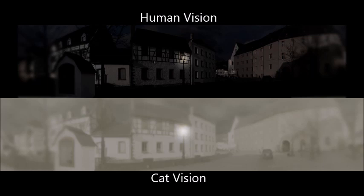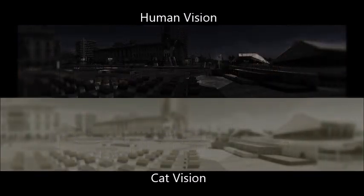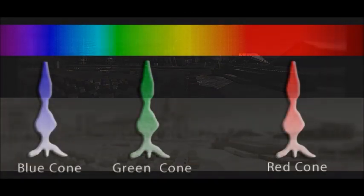Humans have 20 times more rods than cones, but cats have an even higher ratio of rods to cones. This is another factor that allows cats to see better in dim light conditions.